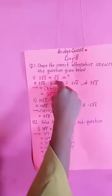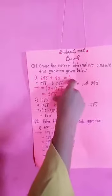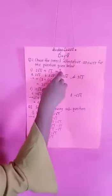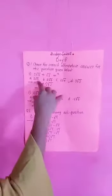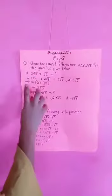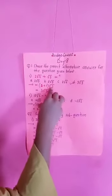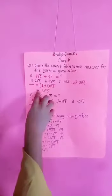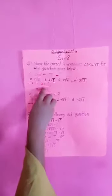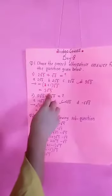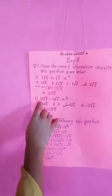First: cube root 3 plus cube root 3 is equal to question mark. The answer is 2 plus 1 bracket complete, cube root 3, which equals (2+1) cube root 3.